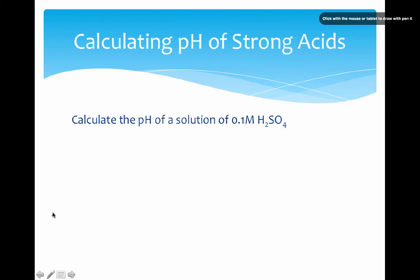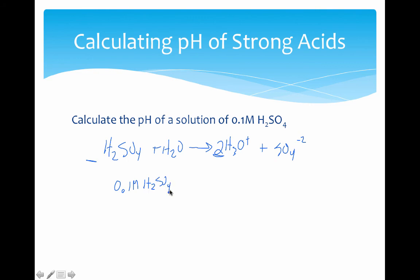If you recall from earlier, when sulfuric acid H2SO4 reacts with water in a Bronsted-Lowry model, it creates 2 moles of hydronium ion and 1 mole of sulfate ion. This 2 to 1 ratio means a 0.1 molar solution of H2SO4 actually turns into a 0.2 molar solution of H3O+. This is the concentration of our H3O+ ion. Once we know this, it's simply a matter of going to our pH equation: pH equals negative log of 0.2. We let our calculator do that heavy lifting, and we get a pH value of 0.7, a very acidic, very low pH.